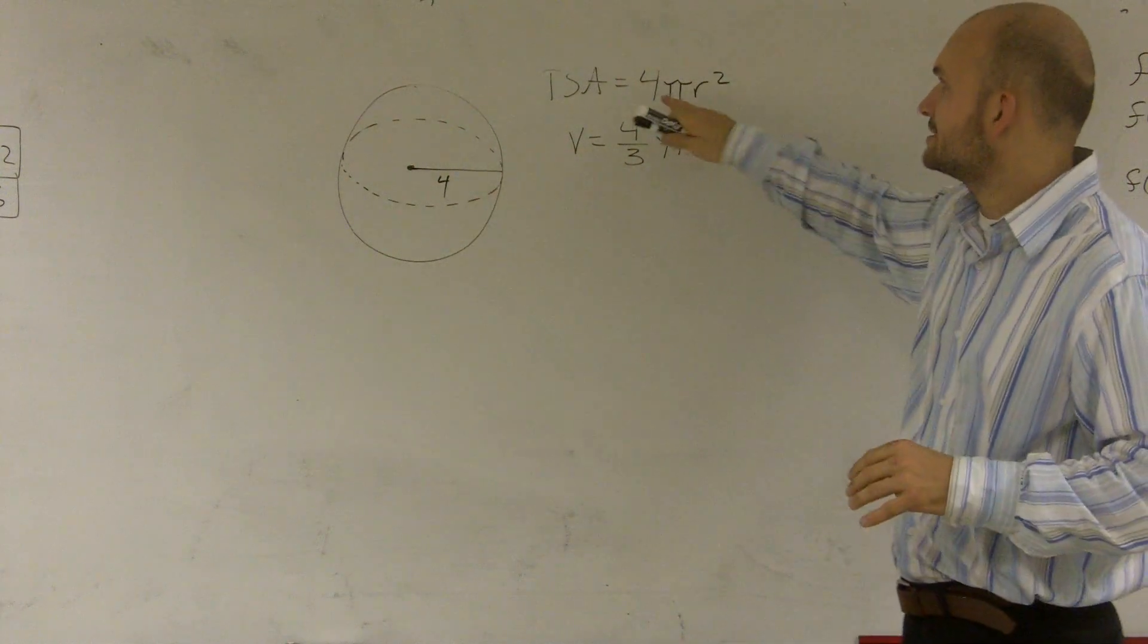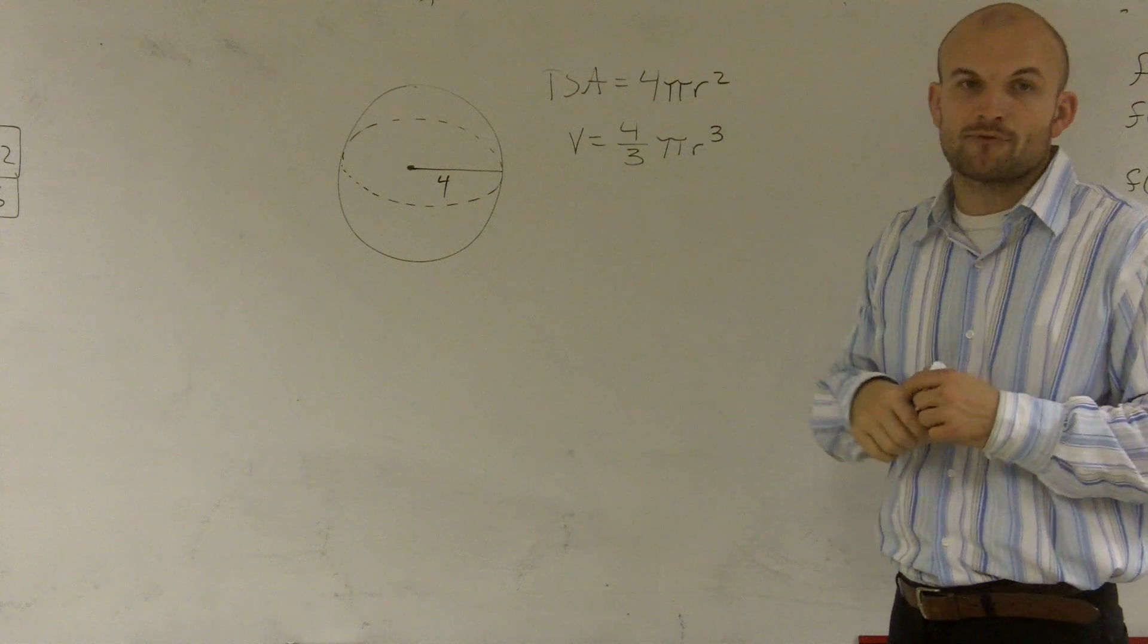So to calculate that, I need to take 4 times pi multiplied by my radius squared.